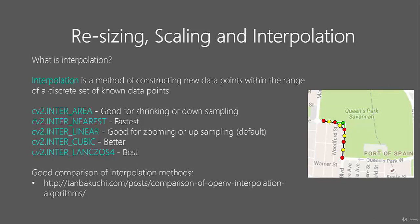So let's talk about the types of interpolation. There's inter-area, nearest, linear, cubic, and Lanczos4. These are all methods — I won't go into full detail here, there's a very good comparison available online. Generally, inter-area is good for shrinking or down-sampling images.